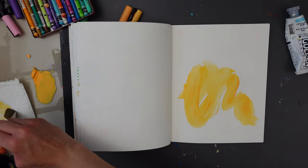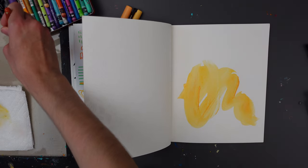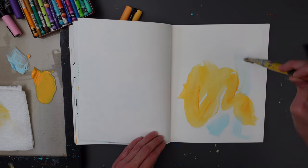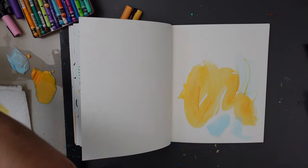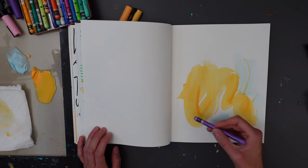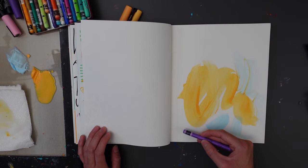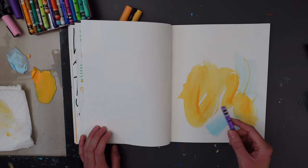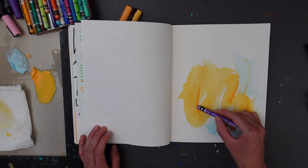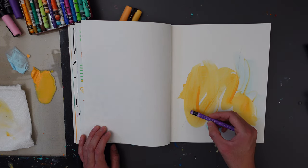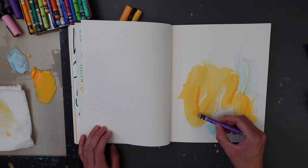Once your background is dry, you can start figuring out where you're going to add your leaf sprig, and I will be lightly sketching out where I would like it. So I'm going to add it using my crayon, and then I'll outline it with my pen.